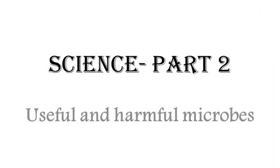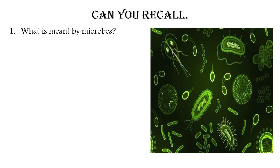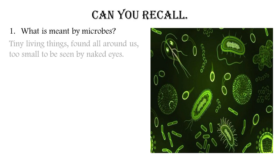Hello students. Today we are going to start with our science part 2, lesson number 8: useful and harmful microbes. Before we start with the lesson, let's recall some things. What is meant by microbes? The tiny living things which are found all around us, which are very small to be seen by the naked eye, are called microbes. They are so small that we cannot see them with the naked eye; we need a compound microscope.